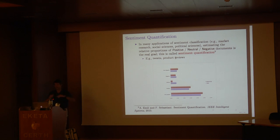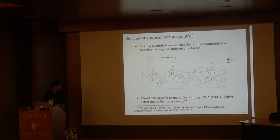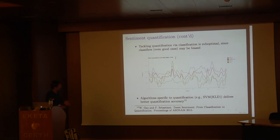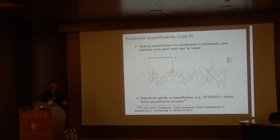Sentiment quantification is going to be important. A temporal trend plot shows across one year of Reuters data (class C12) on the x-axis the temporal progression and on the y-axis the percentage of documents in the class: blue is the true percentage. Different algorithms approximate it to different degrees — green is an SVM optimized for classification accuracy, while red, which is much better, is a quantification algorithm optimized for estimating proportions.